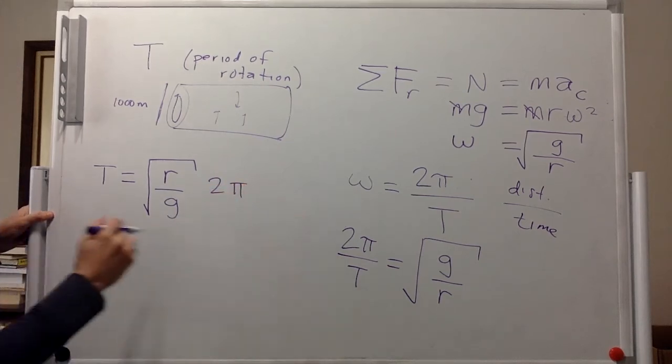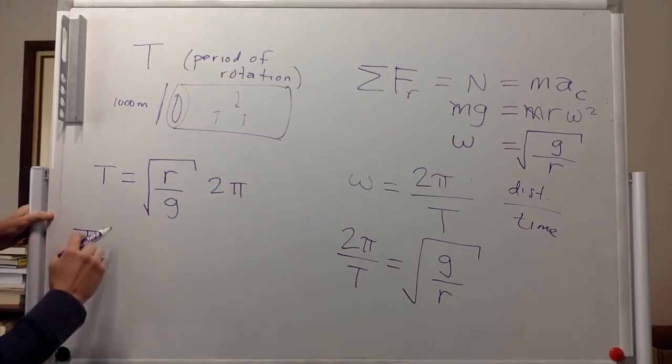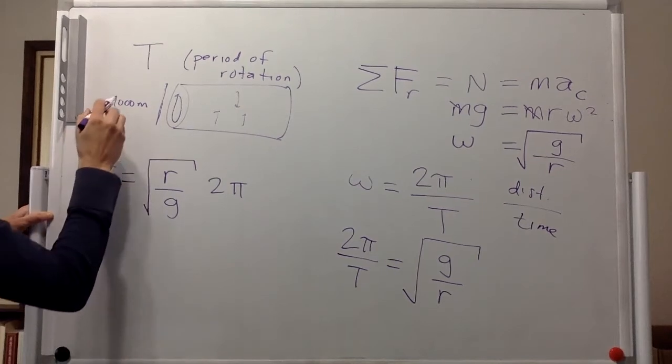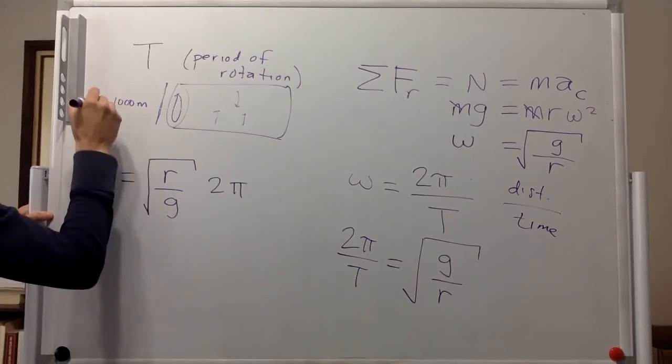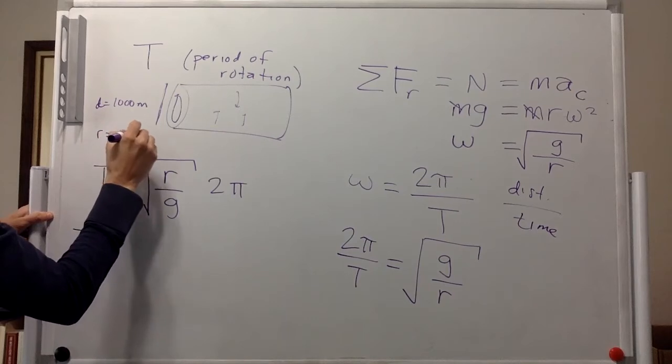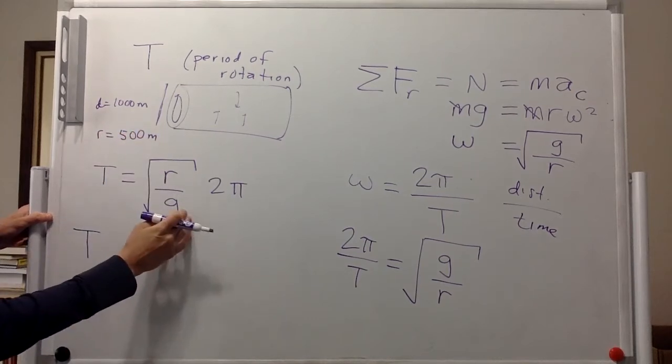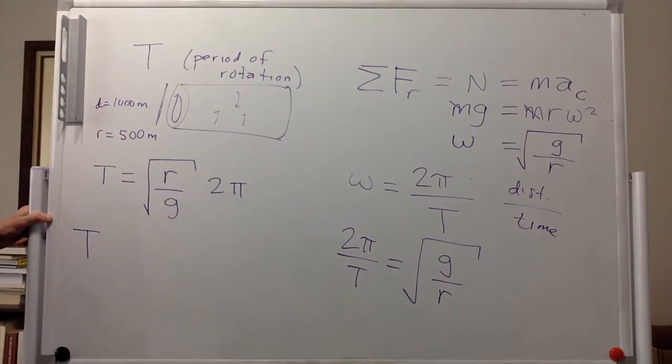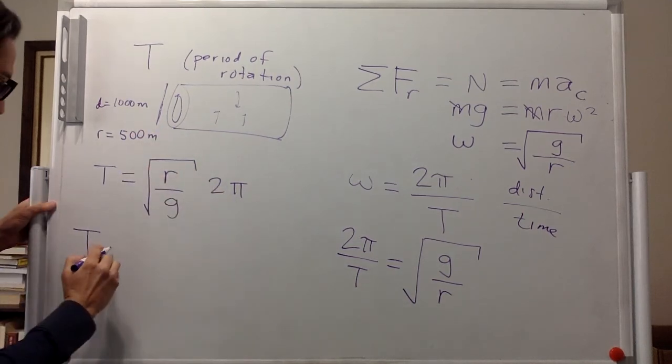I think this is 2 pi. And so we know the radius. So the diameter is 1,000 meters. It means that the radius is 500 meters. We know g. We want g to be the same as on earth. So the acceleration due to gravity on earth and 2 pi is just a constant.